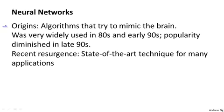The origins of neural networks was as algorithms that try to mimic the brain and there was a sense that if we want to build learning systems, well why not mimic perhaps the most amazing learning machine we know about, which is perhaps the brain. Neural networks came to be very widely used throughout the 1980s and 1990s and for various reasons its popularity diminished in the late 90s.